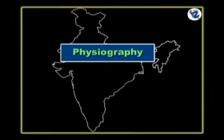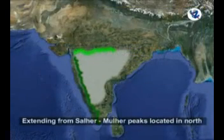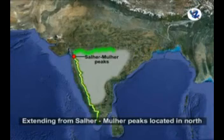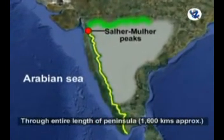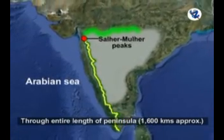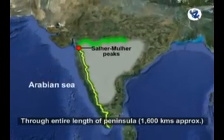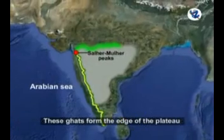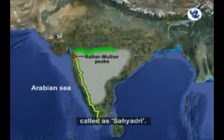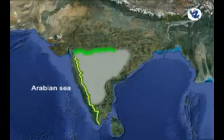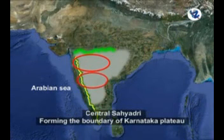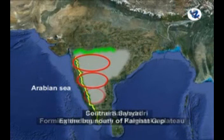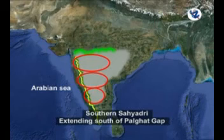Then physiography — the western ghats. Extending from the Salher-Mulher peaks located in the north, the western ghats run parallel to the Arabian Sea through the entire length of the peninsula for a distance of approximately 1600 kilometers. These ghats form the edge of the plateau and are called Sayyadris. Generally, the Sayyadris are classified as northern Sayyadri, the area bordering Maharashtra plateau, central Sayyadri forming the boundary of Karnataka plateau, and southern Sayyadris extending south of Palghat Gap.